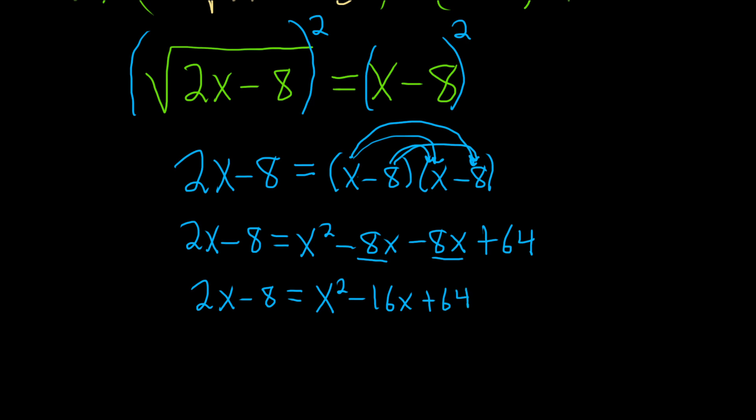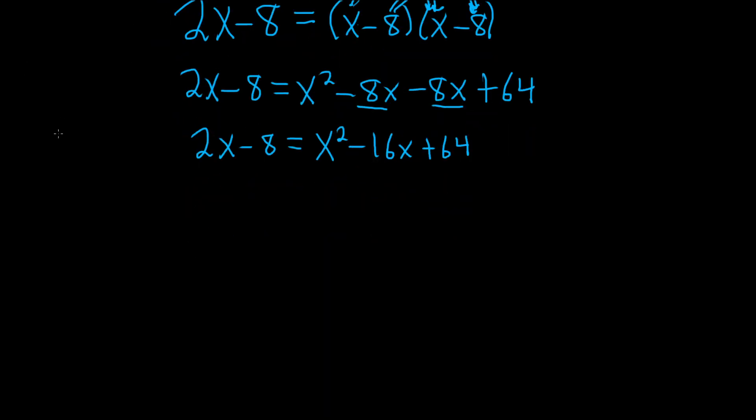So this is a quadratic equation. Whenever you have a quadratic equation, you should always set it equal to 0 in order to try to solve it. So let's do that. We'll subtract the 2x and we'll also add the 8. These cancel, these cancel. So we have x squared minus 16x minus 2x is minus 18x. And then 64 plus 8 is going to be 72. That was like the hardest part of the problem is adding those numbers.